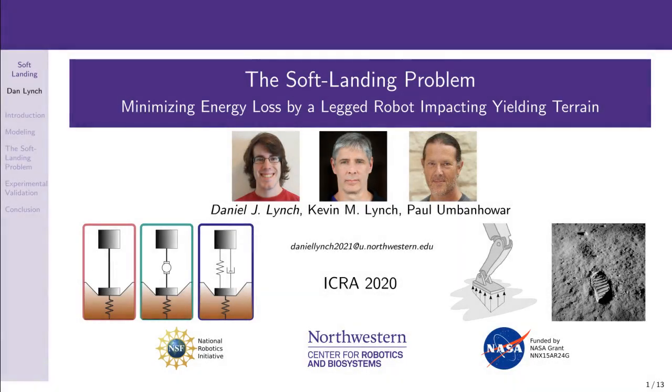My name is Daniel Lynch, and in this video I will present our paper entitled The Soft Landing Problem: Minimizing Energy Loss by a Legged Robot Impacting Yielding Terrain, which was recently published in the IEEE Robotics and Automation Letters. My co-authors are Kevin Lynch, to whom I am not related, and Paul Lubenhauer. We belong to Northwestern University's Center for Robotics and Biosystems and the Department of Mechanical Engineering. I'd like to acknowledge support from NASA and the National Science Foundation.